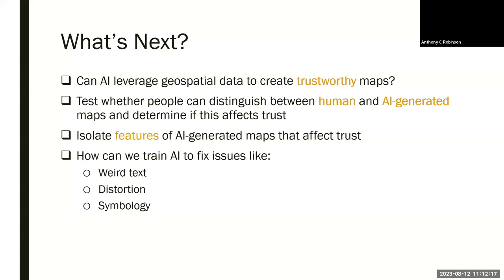I want to conclude with some future steps. It's really crucial to understand if we can have AI like DALL-E leverage real geospatial data to create trustworthy maps. It seems that ChatGPT or similar tools can actually use real geospatial data, which is encouraging. We also need to test whether people can distinguish between human and AI-generated maps, and whether this affects perceptions of trustworthiness. Can we train AI to fix issues like weird text, distortion, and symbology?